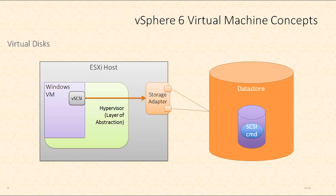Now there are some options for the virtual disk itself. The most common choice is to use a thin provisioned disk. So let's assume that this virtual machine is created with an 80 gigabyte virtual disk, but it only has 40 gigabytes of actual data. This means that only 40 gigabytes of space is actually used on the data store. That's the big benefit of a thin provisioned disk — it is very space efficient.